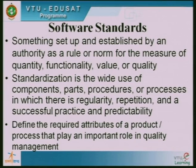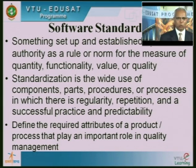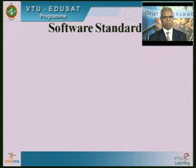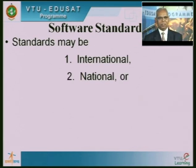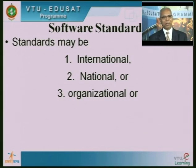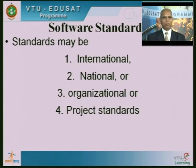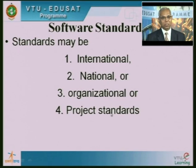Standards define the required attributes of a product or process and play an important role in quality management. In software, there is no raw material, so we make sure our software development processes follow certain standards. Standards may be international standards, national standards, organizational standards — specific to a particular company — or standards specific to a particular project. Within an organization, certain standards apply, but for a particular project we may follow additional standards because of the criticality of the product and its use.